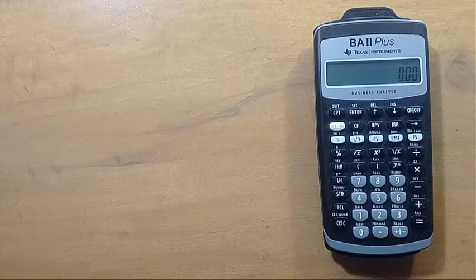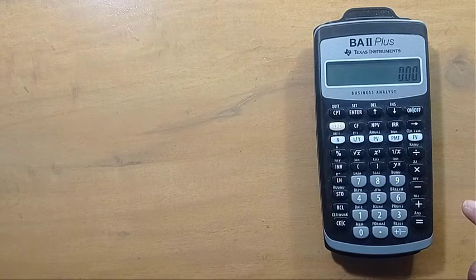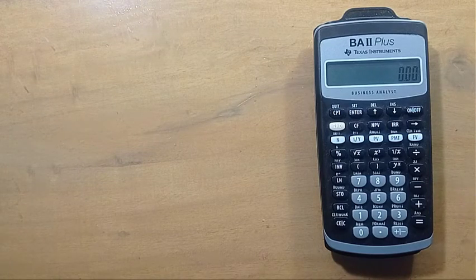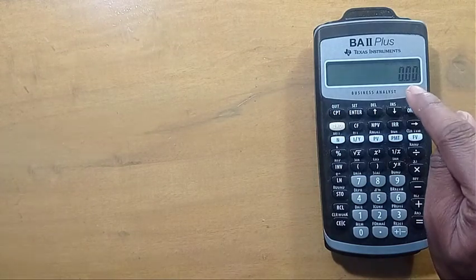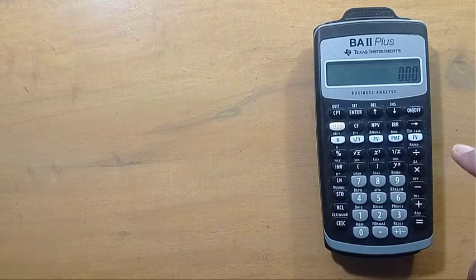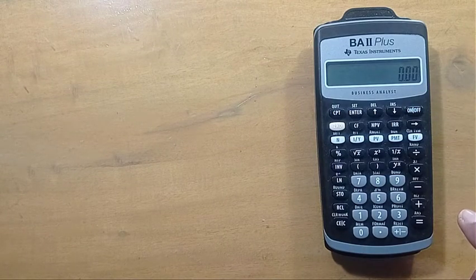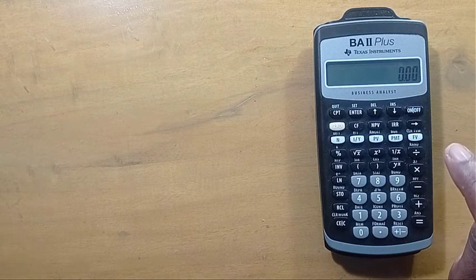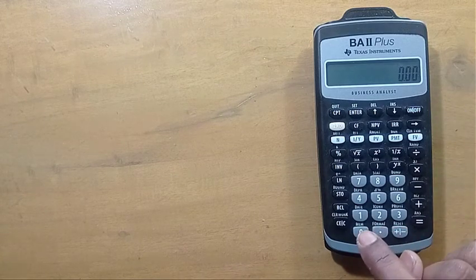This is occurring because 5 to the power minus 4 is a result which consists of 4 digits after the decimal point. But in this calculator, we have set 2 digits after the decimal point. That is why we are not getting the result. So we have to change this format.